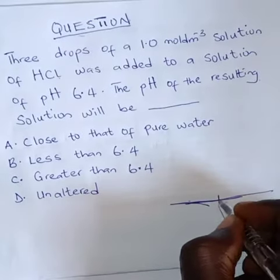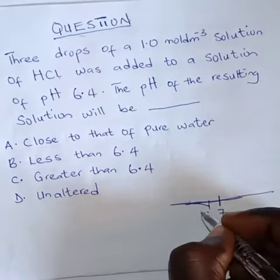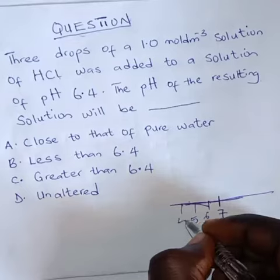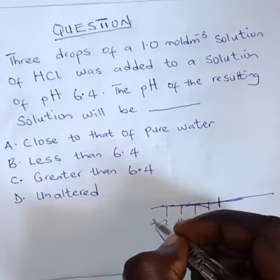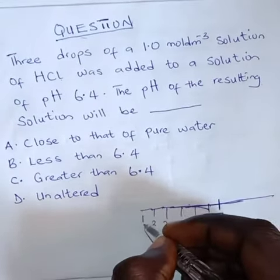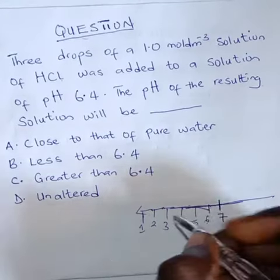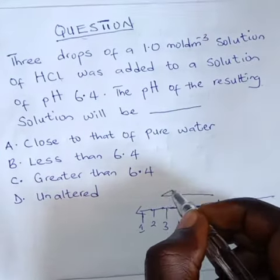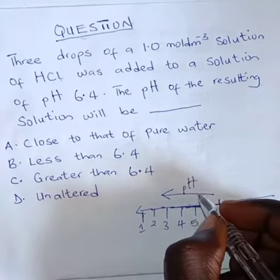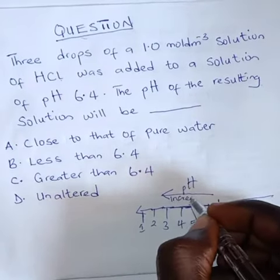So if we have our seven as the neutral, six, five, four, three, two, one, as we go this way, as the pH value goes this way, it means it is increasingly becoming acidic. This is increasing acidity.